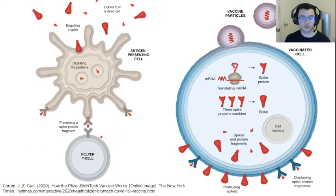This cell then goes over to what's called a helper T cell, another immune cell. The helper T cell recognizes this viral spike protein and starts telling your body to initiate its immune response to these S proteins.